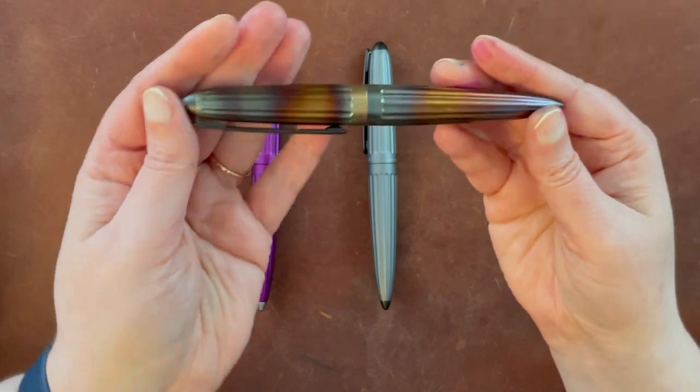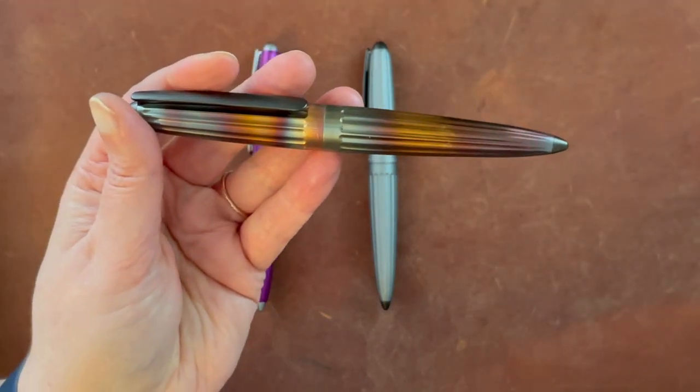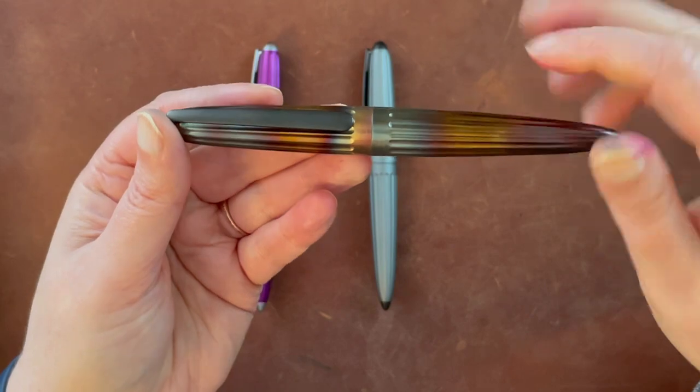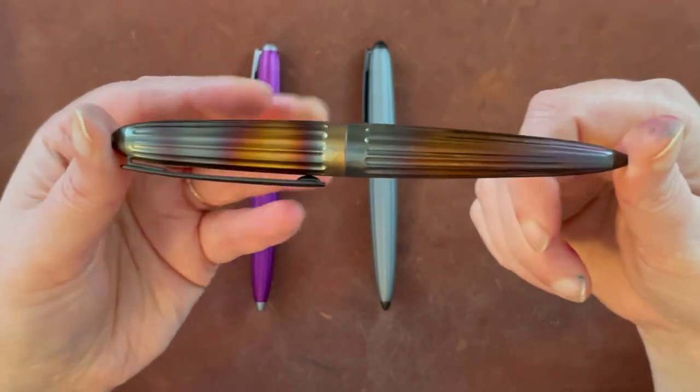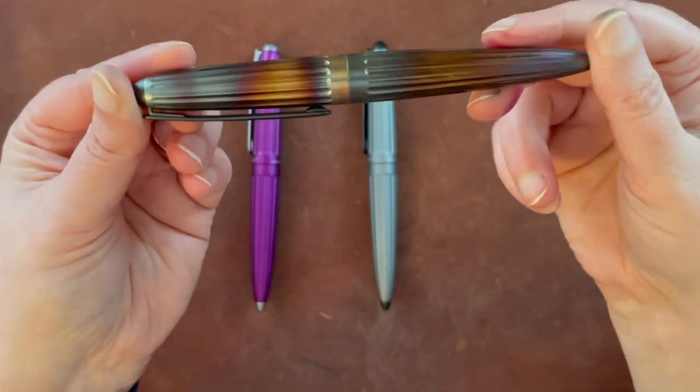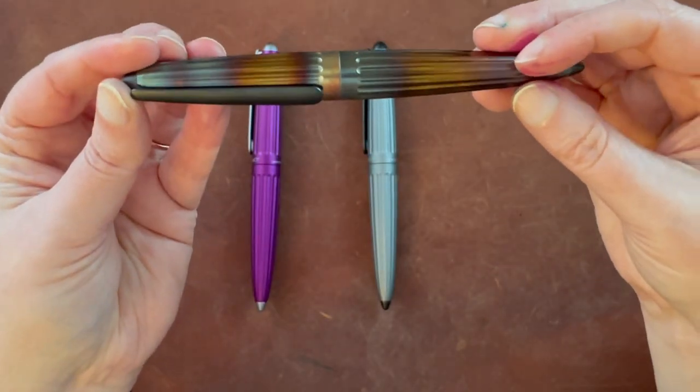It is the flame version, which is actually hand flamed over a flame and then they put a coating over it to preserve the patina that they've made with the flame. It's really, really beautiful.